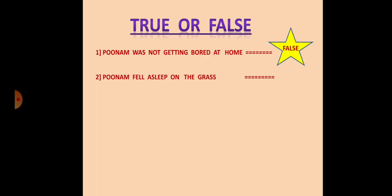The second one: Poonam fell asleep on the grass. Did she sleep on the grass? Let us check. It is false. Where did she sleep? She fell asleep on the cot. Correct.